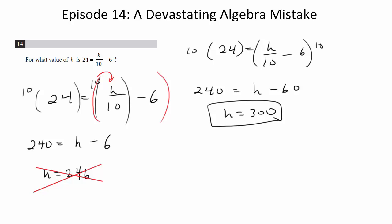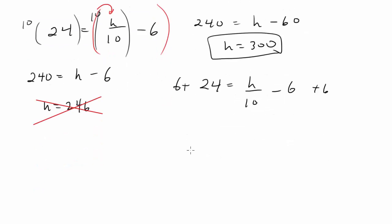Now, another way to do it, which avoids this whole issue, is to, in fact, get rid of the 6 first. And maybe some of you did it this way. So we'll go back here. I'm going to add 6 to both sides. And that's going to get me 30 equals h over 10. Multiply both sides by 10. I get h is 300. So just be careful with the order of your algebra and that you're doing things to both sides, not just to individual terms.